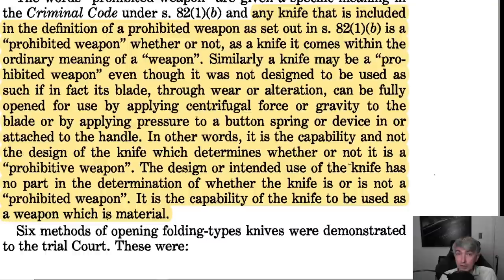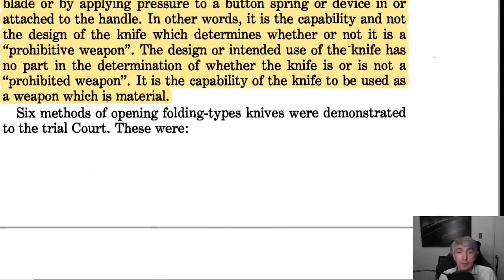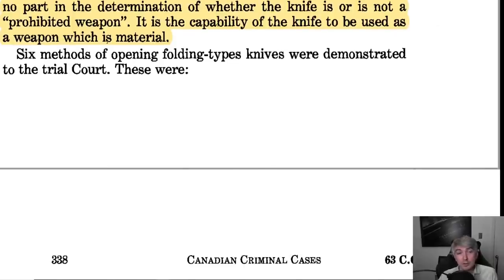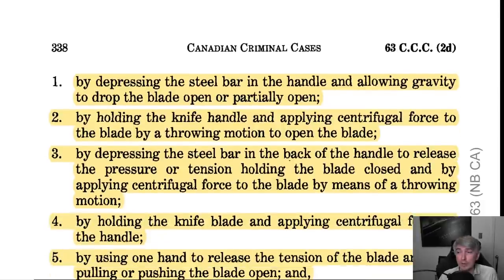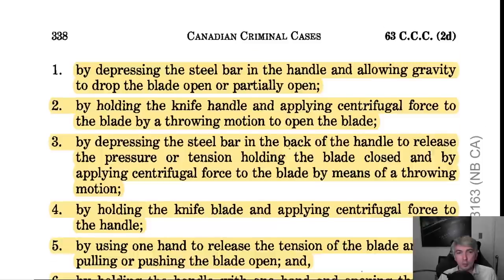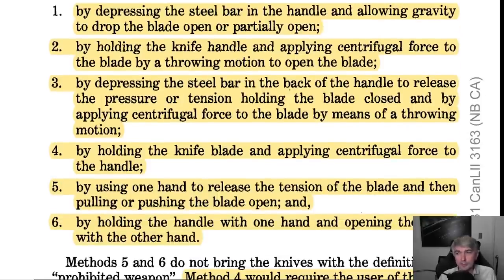This is important: if your knife wears out to the point where it just flicks open, it has become a prohibited weapon. There is other case law — in the context of magazines and firearms — where if a firearm malfunctions and becomes fully automatic, you have a responsibility to quickly either repair it or dispose of it. You can't keep it around just because it now works in a way you like. So they noted with the knives in front of them — this is a 1981 case — they talk about six ways for these to open.